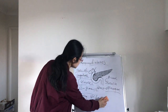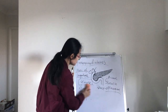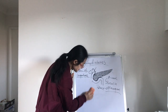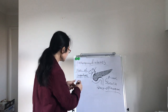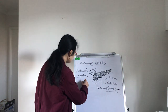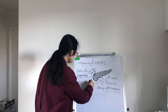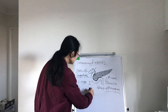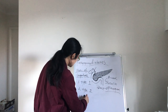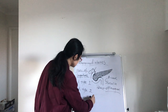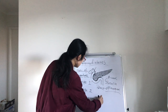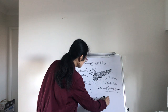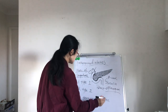There are three types of diabetes: type 1, type 2, and gestational diabetes.